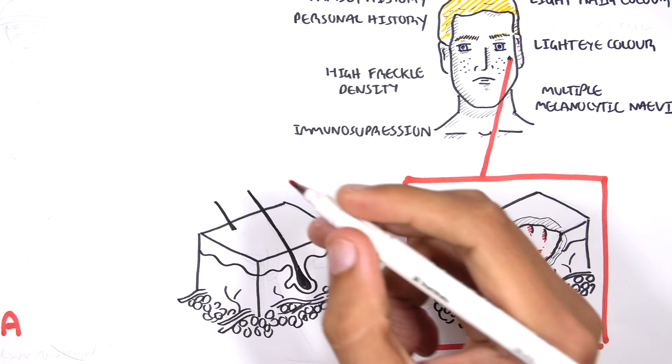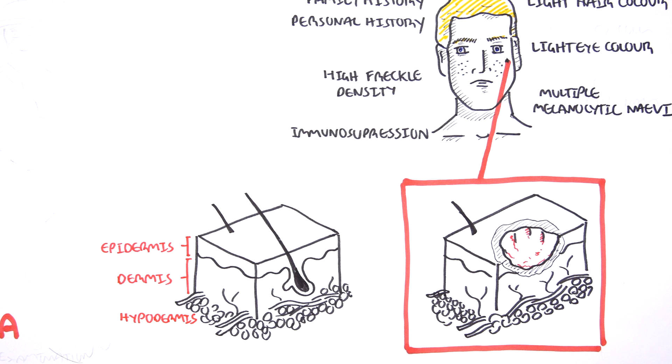The top layer of our skin is known as the epidermis. Below the epidermis is the layer called the dermis. Below the dermis is another layer known as the hypodermis, which contains subcutaneous fat, which is important for thermoregulation.